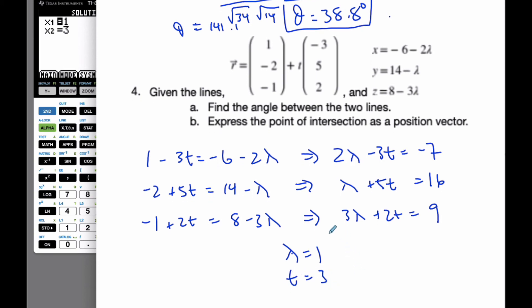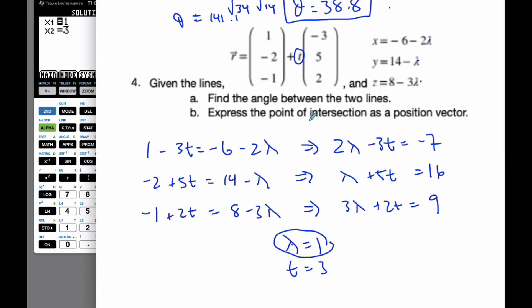So what that means, if I put t equal to 3 in here, I'll get my point of intersection. I'll get the same point as if I plug lambda is 1 in here. If I want to actually find the point, maybe the 1 is easier.